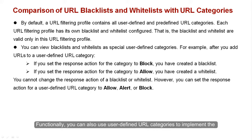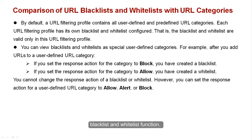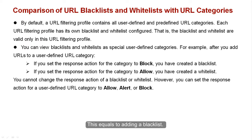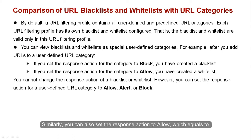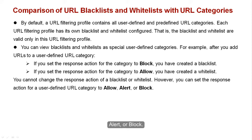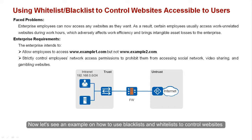Functionally, you can also use User-Defined URL Categories to implement the Blacklist and Whitelist function. For example, you can add URLs to a User-Defined URL Category and set the response action to Block — this equals adding a Blacklist. Similarly, setting the response action to Allow equals adding a Whitelist. Therefore, you can view Blacklists and Whitelists as special User-Defined URL Categories, except that you cannot change their response action. For a User-Defined URL Category, you can set the response action to Allow, Alert, or Block.